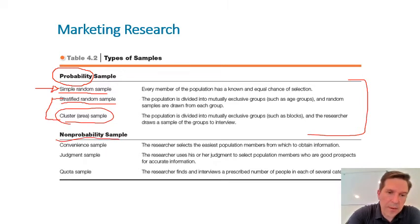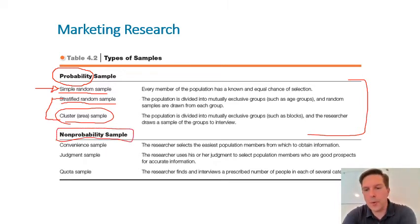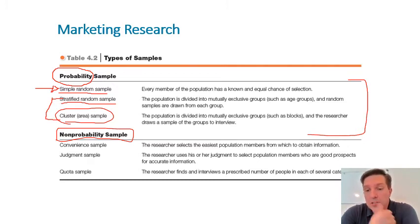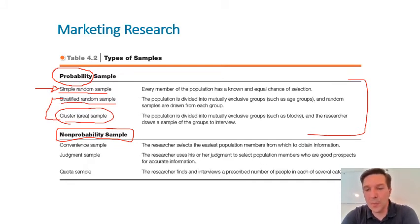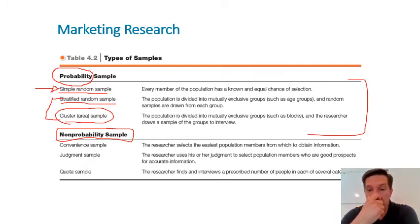Other than probability samples, we have non-probability samples. The reason you do non-probability sampling is because it's cheaper and more convenient — you can get your data faster and spend less money. The downside is that whatever results you get from the sample cannot be easily generalized to the population. You don't have the mathematics that enable you to take the data and say it applies to the population in a particular way. So the downside is you cannot generalize; the upside is cheaper, more convenient, and faster.